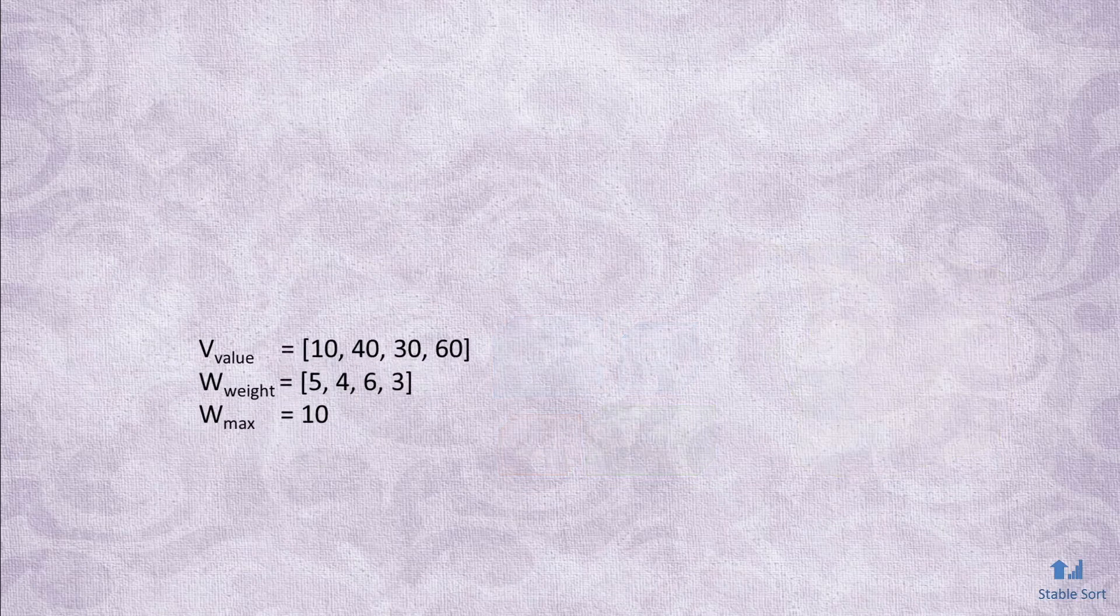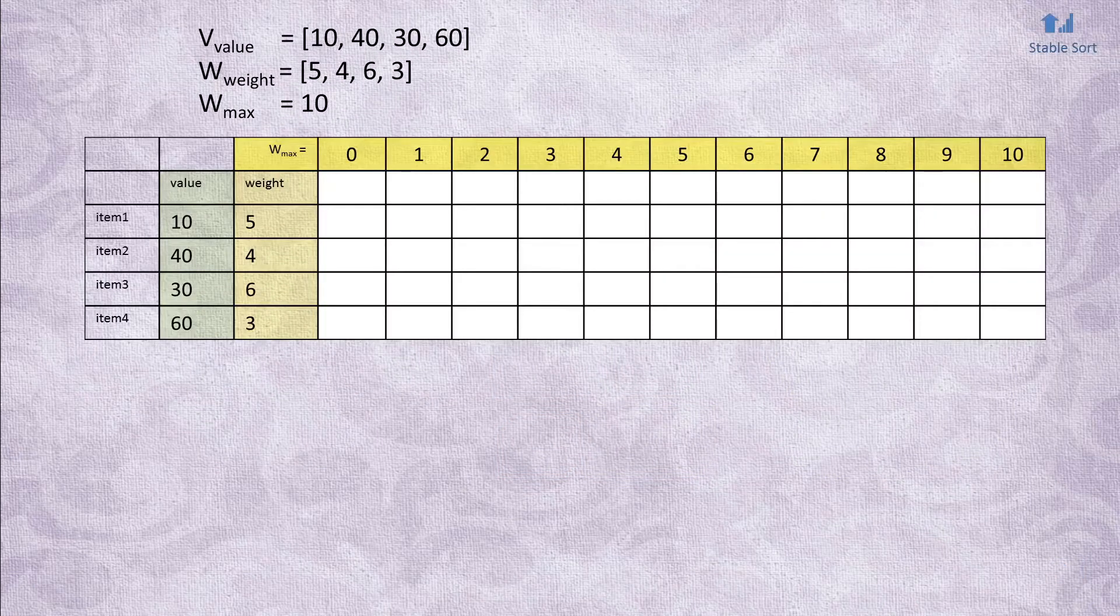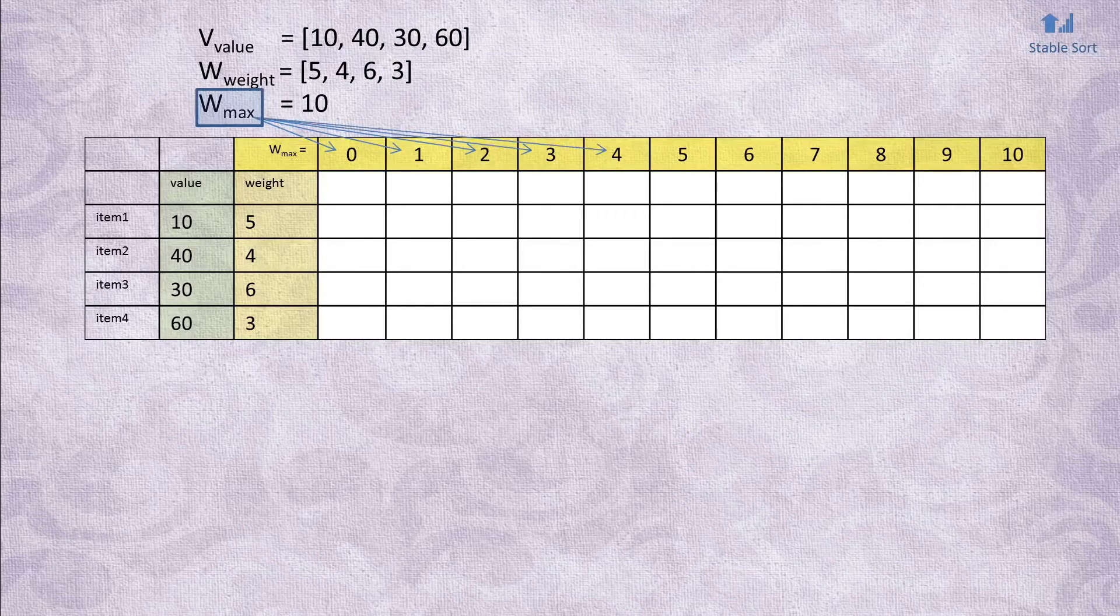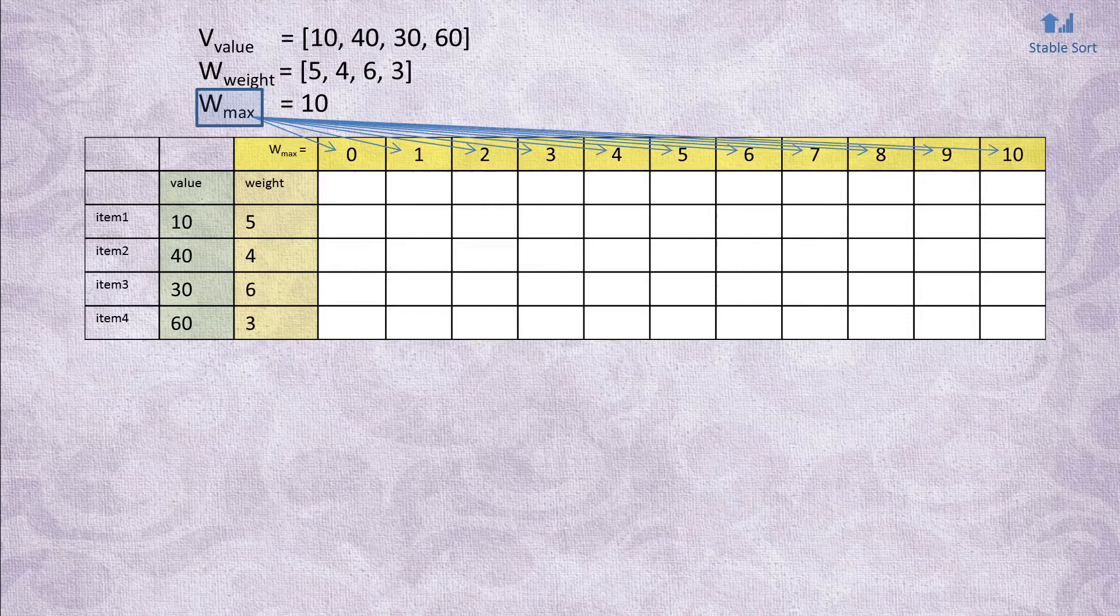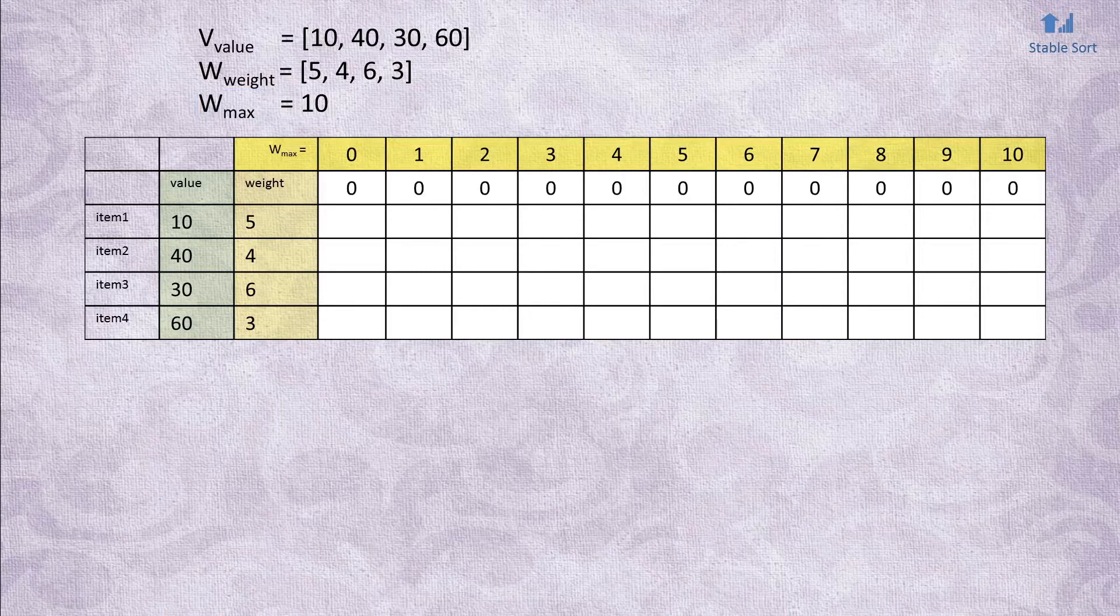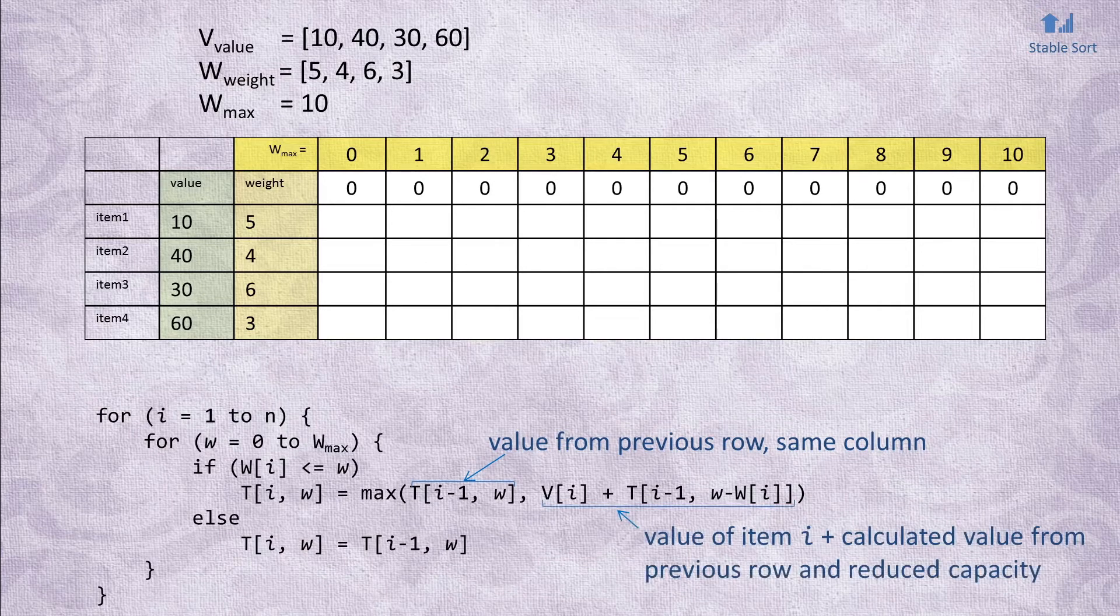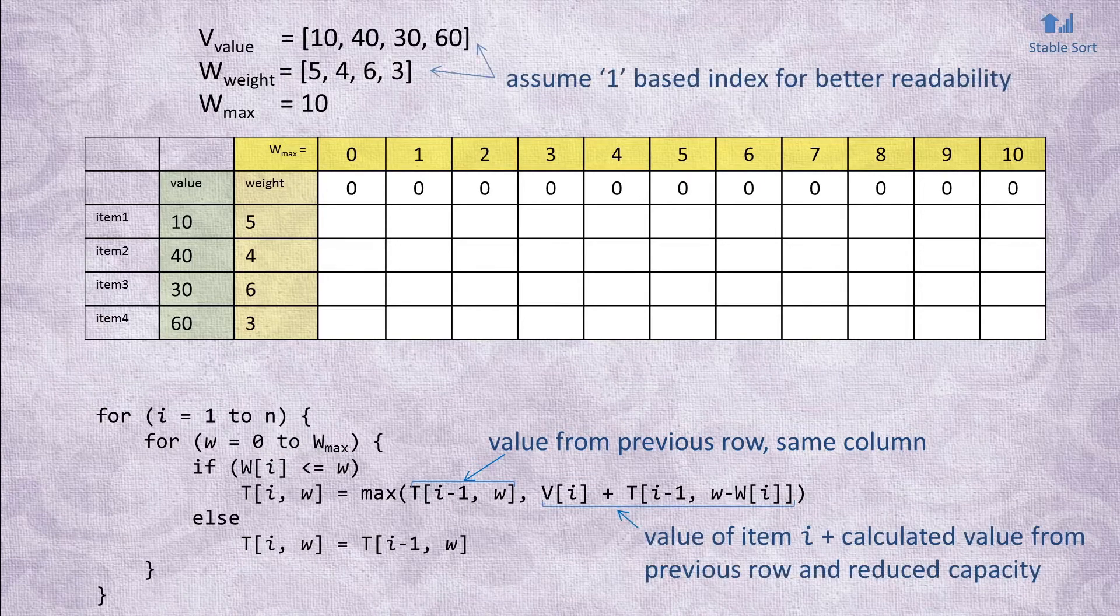Let's construct a table of size w max plus 1 by n plus 1. We'll call it table t. Each column in our table holds incrementally larger and larger knapsack capacity, while each row brings in an additional item to be included in a calculation. The first row of the table will initialize with zeros. The rest of the table will fill out using this pseudocode. Let's walk through a few examples to make it clear how it works.